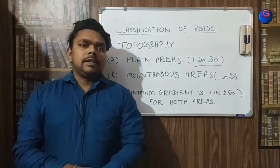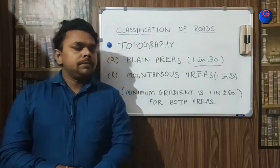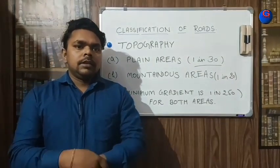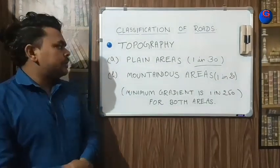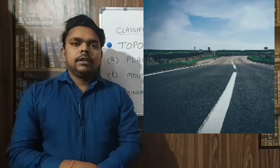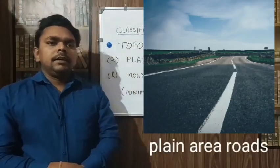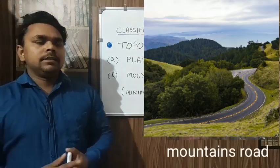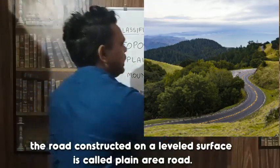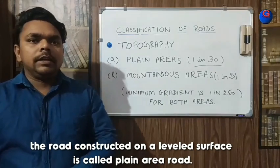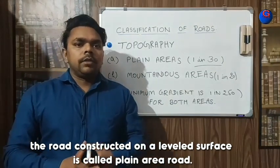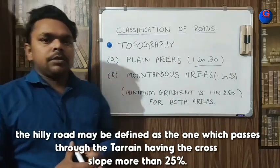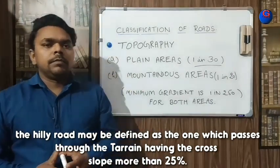The last classification we discuss is topography-based road types: plain area roads and mountainous area roads. For plain areas, the ruling gradient should be 1 in 30 as per the Indian Road Congress. For mountainous roads, the ruling gradient should be 1 in 20.